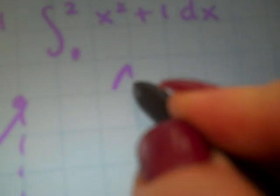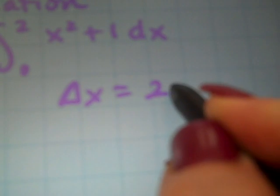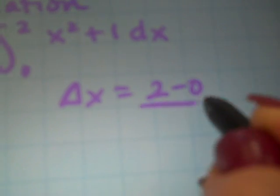We still need to find delta x, and it's still 2 minus 0 over the number of rectangles 4, which is 1 half.